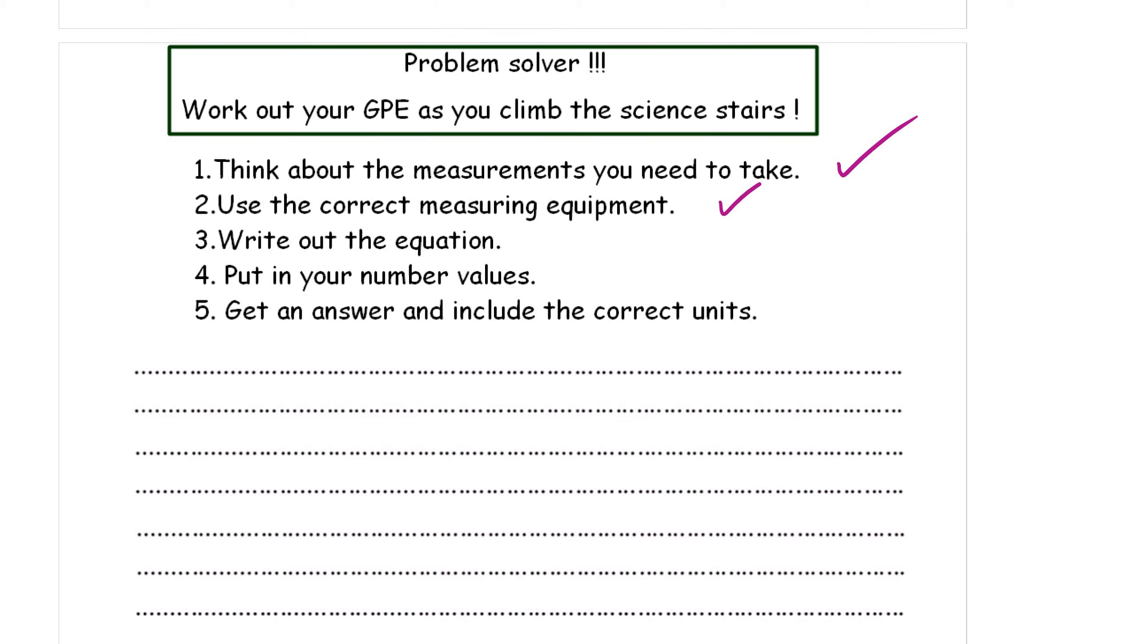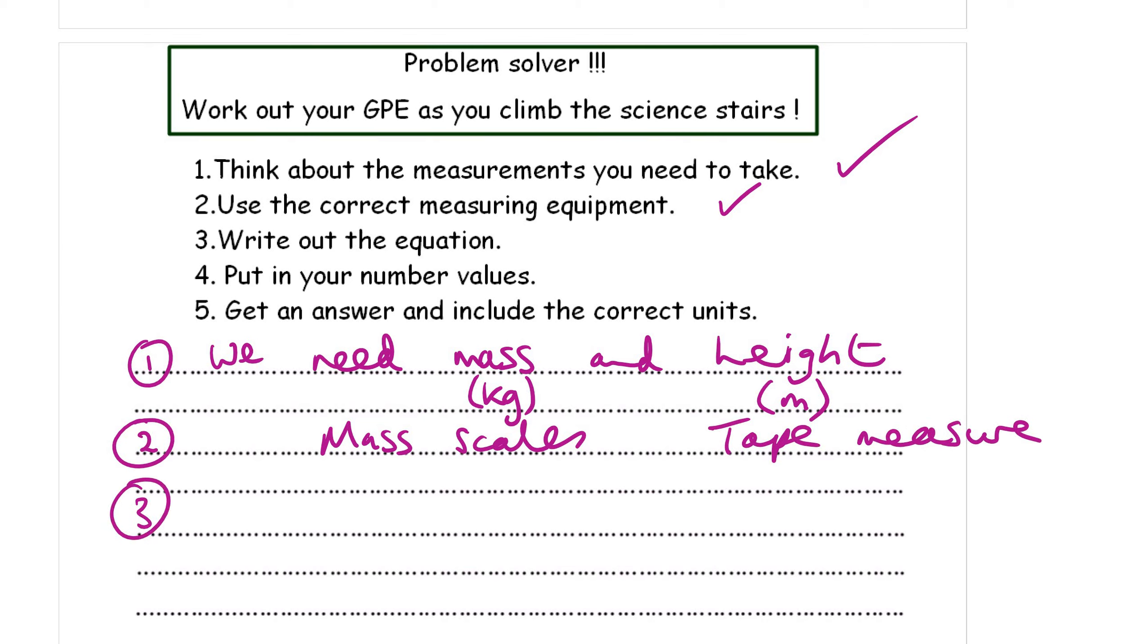Write out your equation. Number one, we need mass and height. We need mass in kilos and height in meters. What's the correct equipment? We need mass scales. And for height, we need a tape measure. Number three, write out the equation. GPE equals M times G times H.